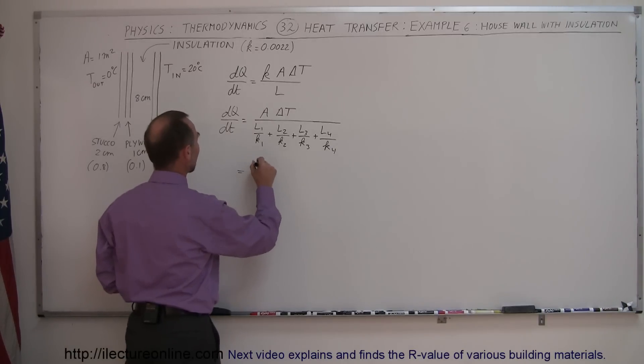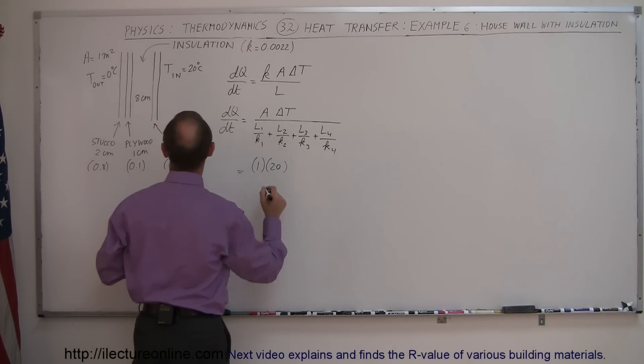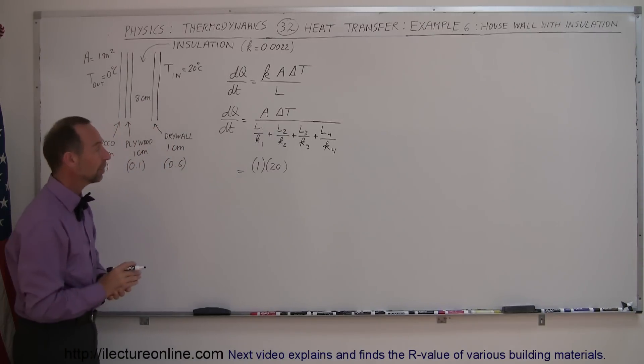All right, so we had said that we're going to take a typical one square meter section of wall. The difference in the temperature between the outside and the inside was 20 centigrade degrees.